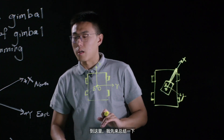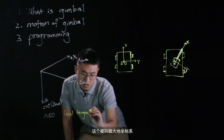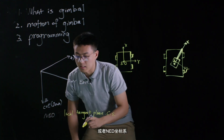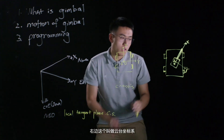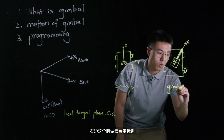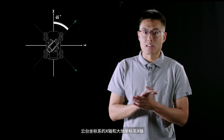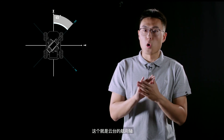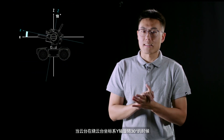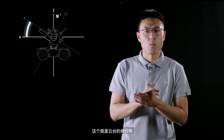So now we have three coordinate systems: the local tangent plane coordinate system (or NED coordinate system), the chassis coordinate system, and the gimbal coordinate system. With these three coordinate systems, we can accurately define the yaw angle and the pitch angle. When the gimbal rotates 45 degrees around the z-axis of the gimbal coordinate system, the x-axis of the gimbal coordinate system and the axis of the local tangent plane coordinate system will form an angle of 45 degrees — which is the yaw angle of the gimbal. When the gimbal rotates 30 degrees around the y-axis of the gimbal coordinate system, the z-axis of the gimbal coordinate system and the z-axis of the local tangent plane coordinate system will form an angle of 30 degrees, which is the pitch angle of the gimbal.